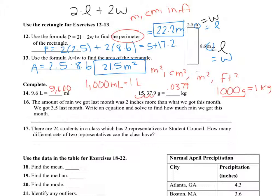Number 16, the amount of rain we got last month was 2 inches more than what we got this month. We got 3.5 last month. Write an equation and solve to find how much rain we got this month. So the amount that we got this month were going to be x. So if the rain we got last month, which is 3.5, was 2 inches more.